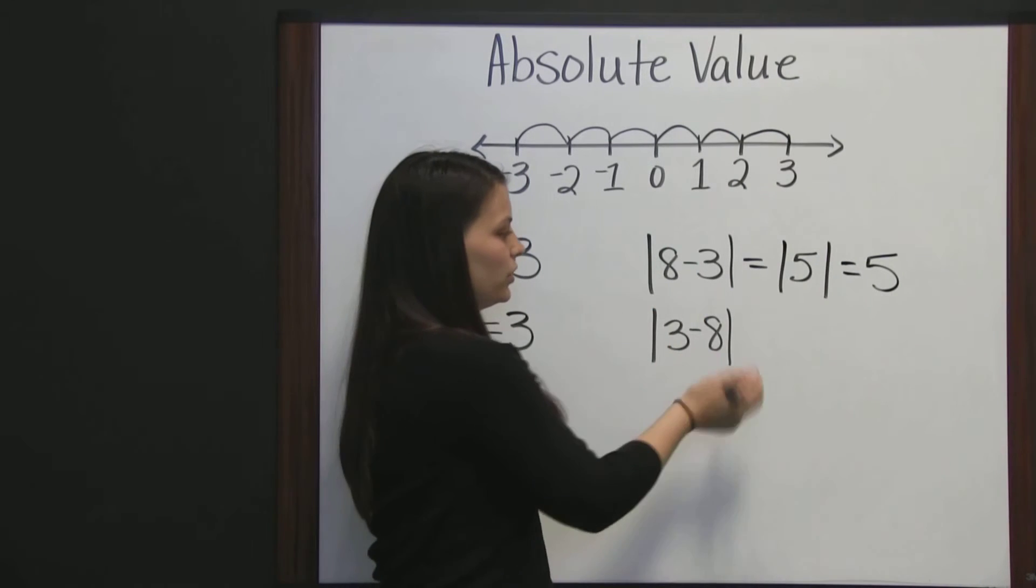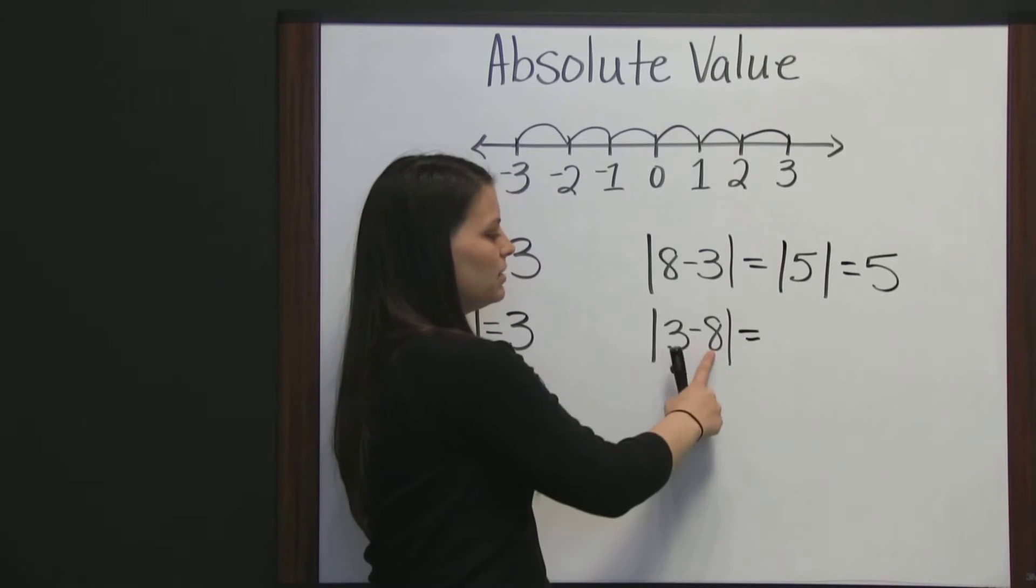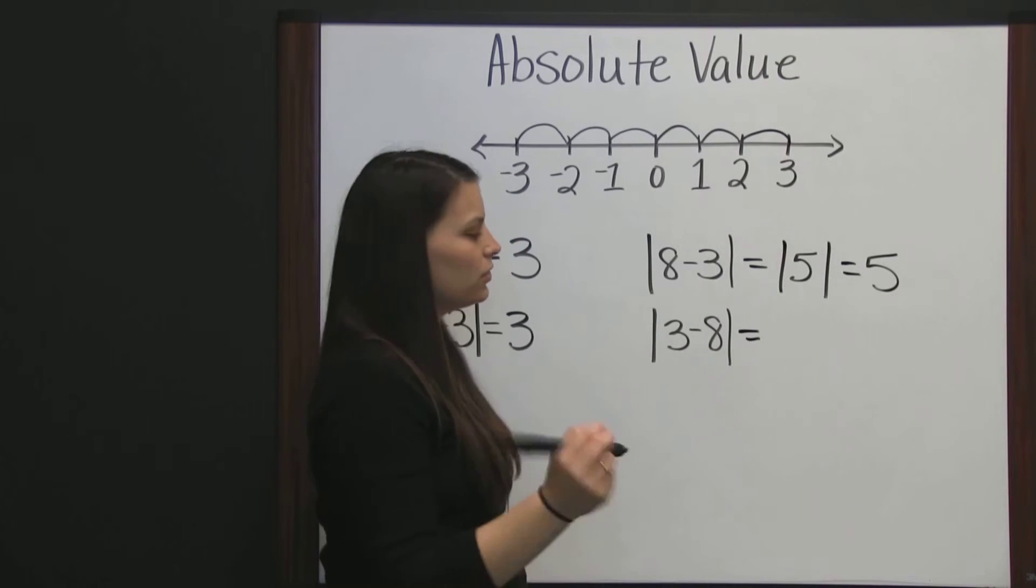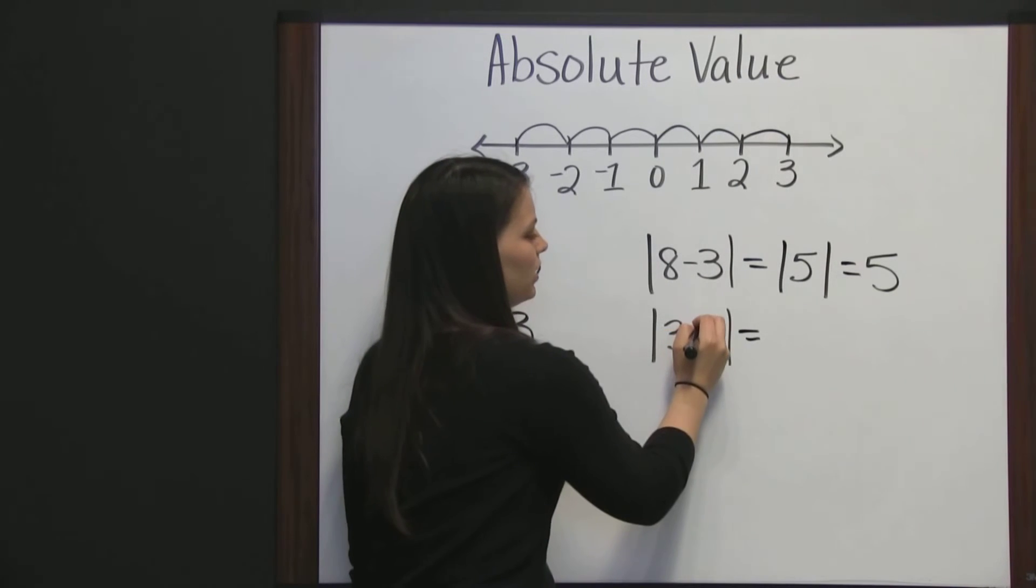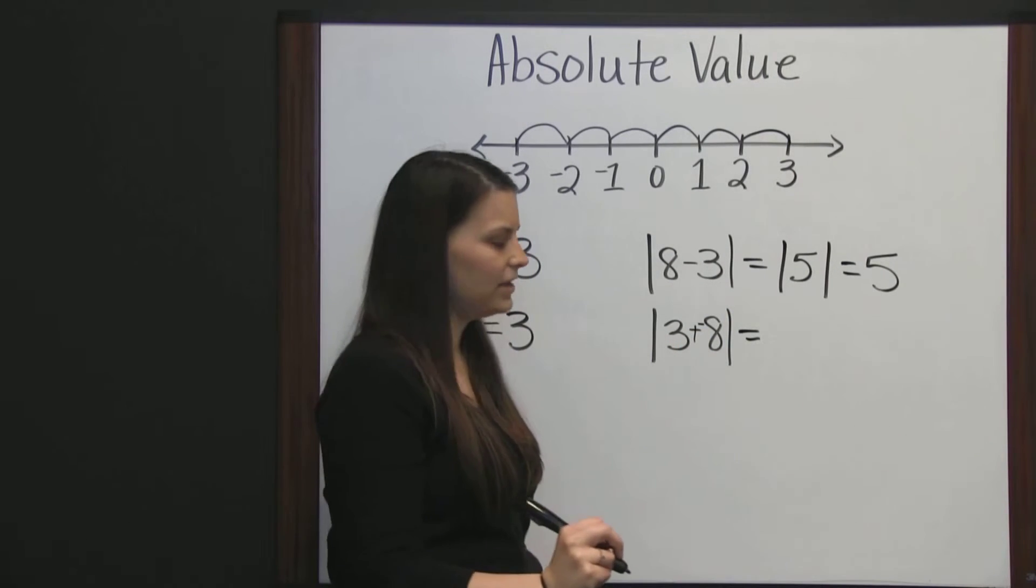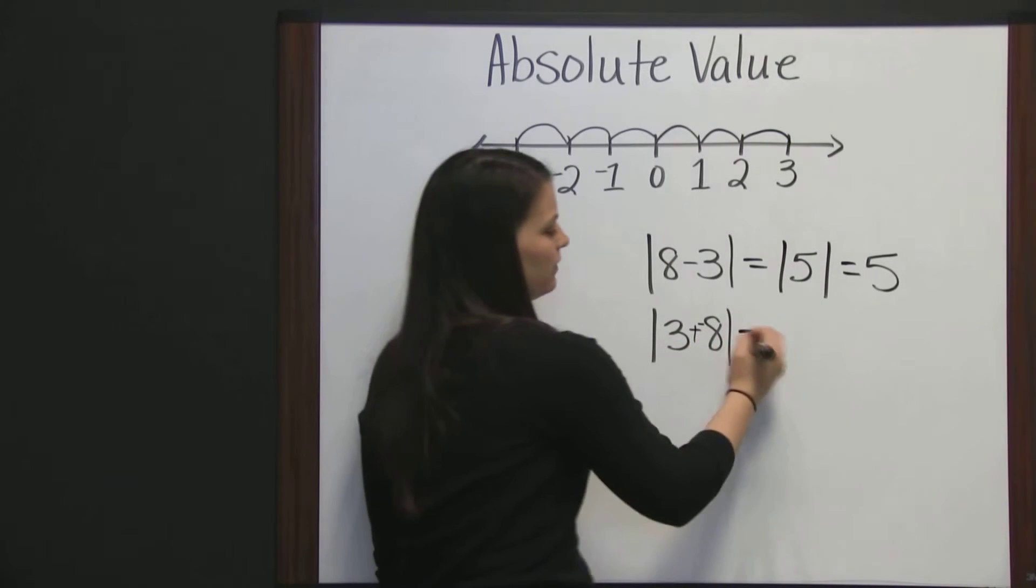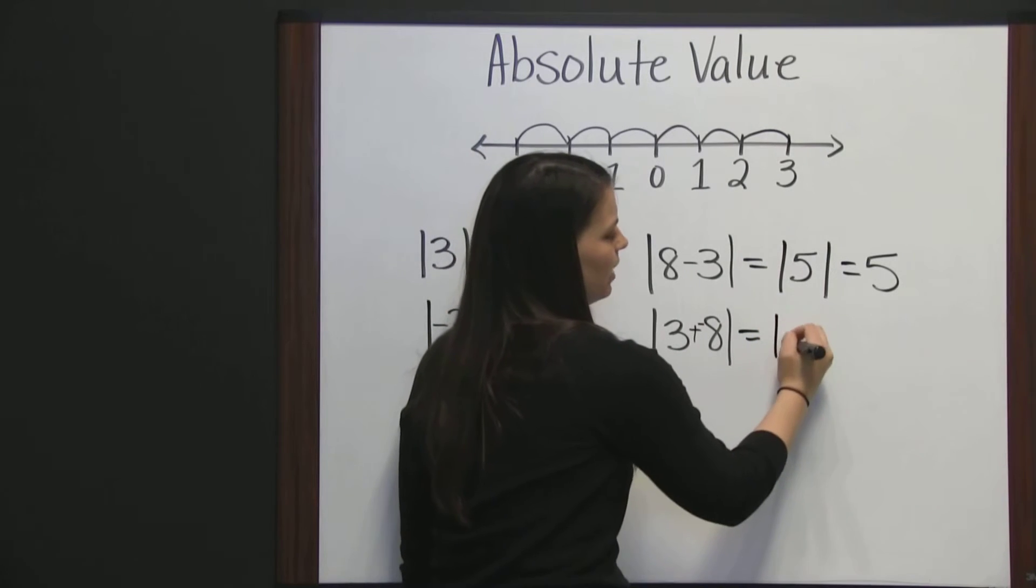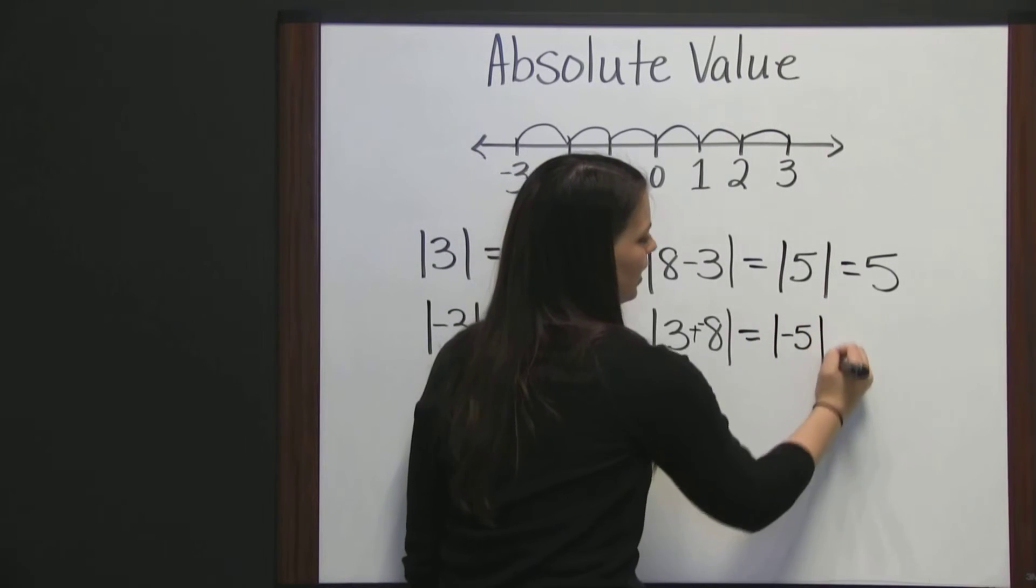Now, we'll look at the difference switched around. Three minus eight. Three minus eight, you could do add the inverse of three plus a negative eight. Three plus a negative eight is negative five. So, we have the absolute value of negative five.